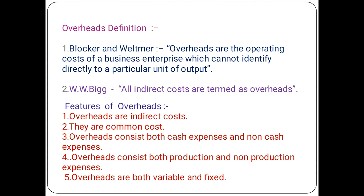Fifth feature: overheads are both variable and fixed. Some overheads are fixed and some overheads may be variable. According to change in activity, overheads may change, while some overheads can always remain constant. Therefore overheads are a combination of variable and fixed costs.